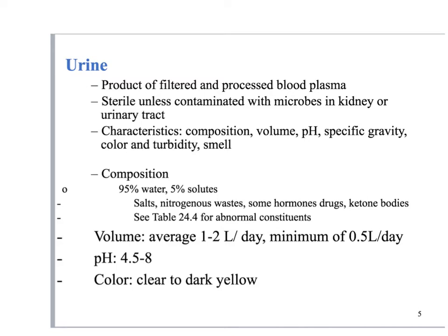Volume is about one to two liters per day on average. At minimum, you need to produce at least half a liter of urine per day. Less than that, and your body is not going to be able to remove the waste it needs to remove. Those wastes then accumulate in the blood, which can cause a lot of problems.